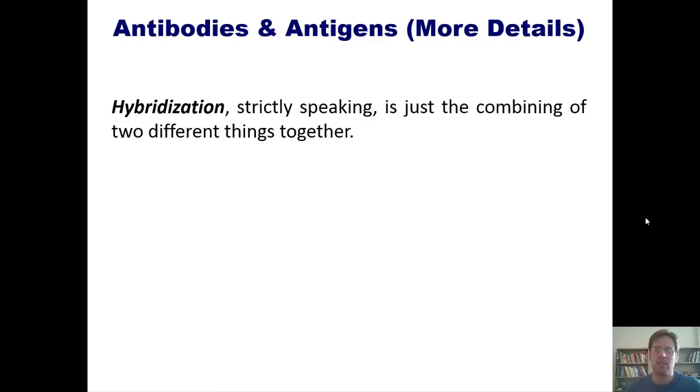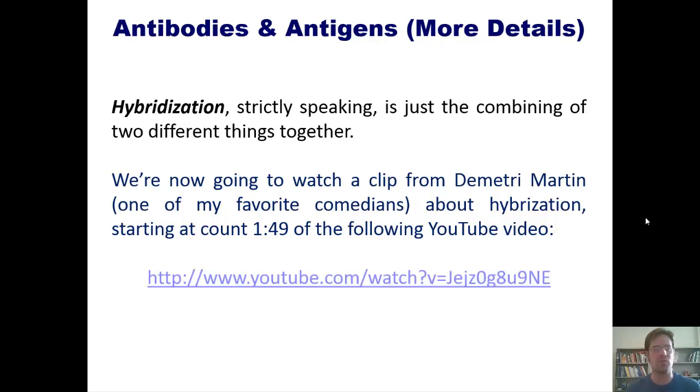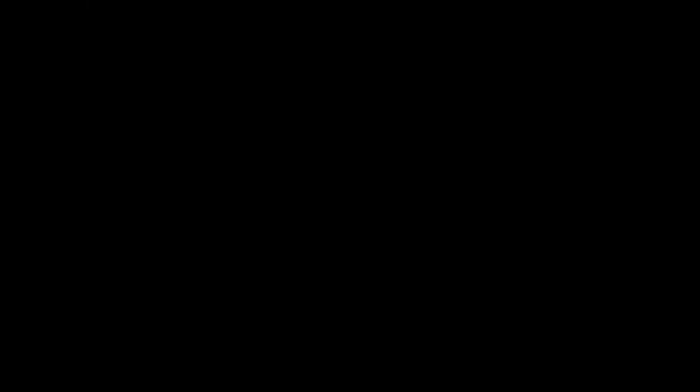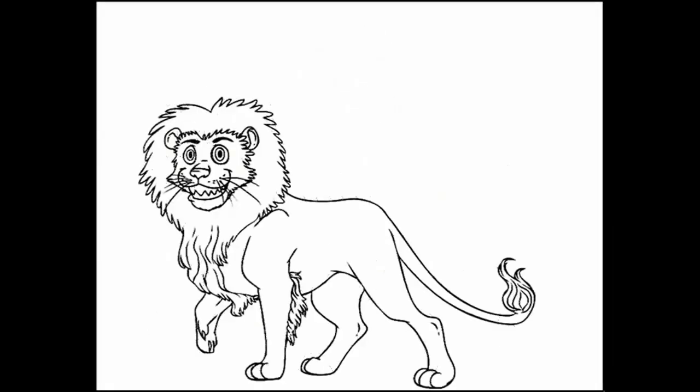Strictly speaking, hybridization is just the combining of two different things together. On that note, I'd like to show you a brief clip from one of my favorite comedians, Dimitri Martin, about hybridization, which starts at count 149 of the following YouTube video to which I'll link right here. If you want to make an imaginary animal, if you want to make a mythical creature, just take a regular animal and add wings to it. Horse becomes Pegasus. A lion becomes a griffin. And a hawk becomes a double hawk.